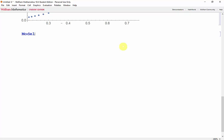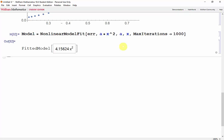We'll input this into model, which is the NonlinearModelFit of error, fit into a*x², with the parameter a and variable x. Let's set our MaxIterations to 1000, and we get the following fitted model.